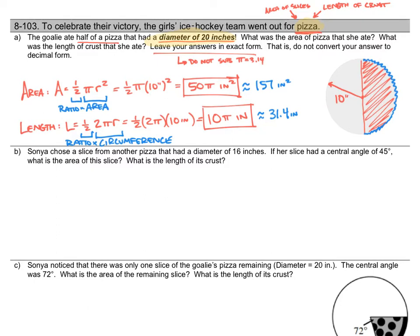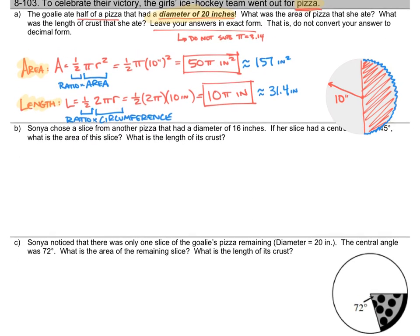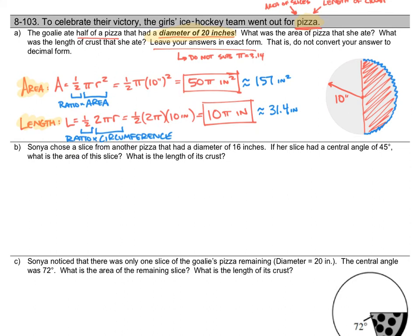For the rest of these problems, I'm going to go through this same procedure: calculating the area of pizza consumed and the length of crust consumed, giving both the exact and approximate answers so you can get a feel for working with both. Let's move on to part B. We're talking about Sonia. She chose a slice from another pizza with a diameter of 16 inches. The first slice had a central angle of 45 degrees. What is the area of this slice and the length of its crust?